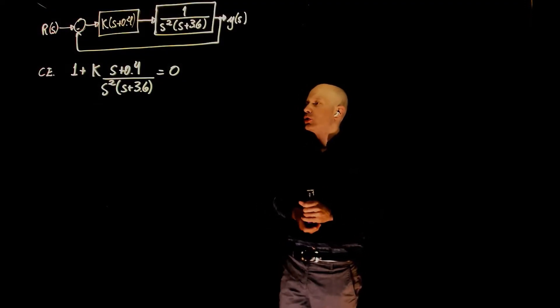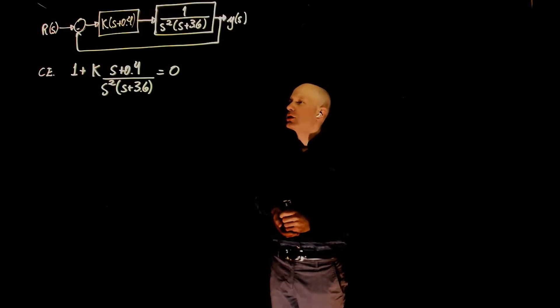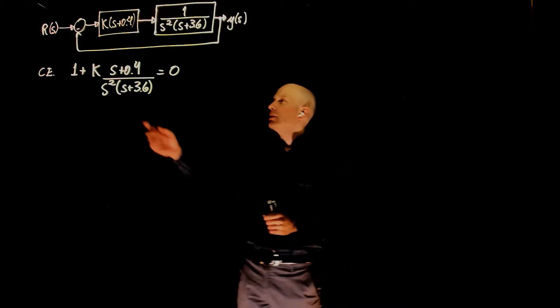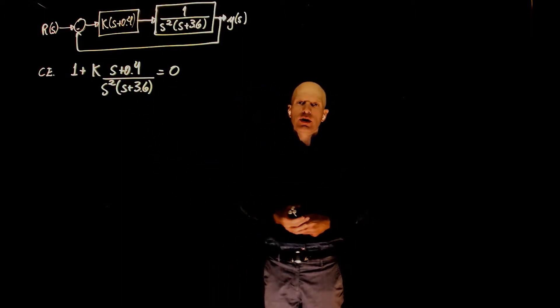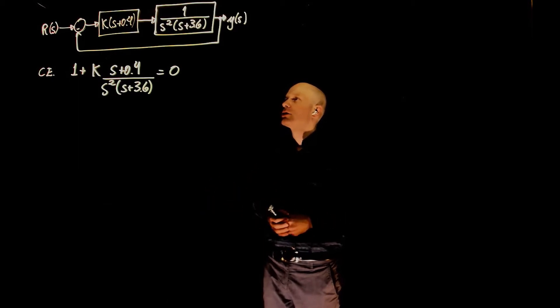Here we have another exercise on root locus. This is very similar to exercise 62, except that here the pole has been moved to negative 0.4 instead of negative 1. Let's see how that affects the root locus.